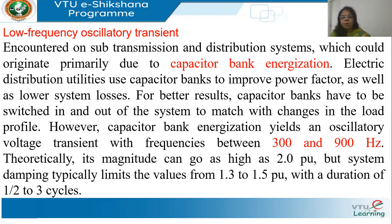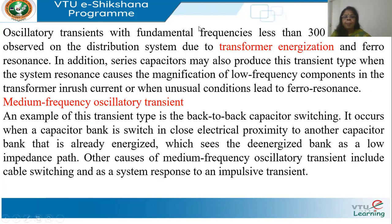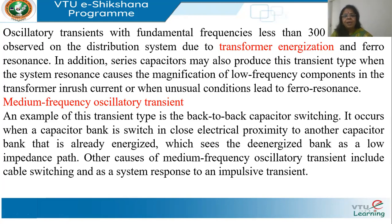Oscillatory transients with fundamental frequencies less than 300 Hz are observed due to transformer energization, through a phenomenon called ferroresonance — the transformer inrush current has harmonic content that leads to a kind of resonance causing low-frequency transients.